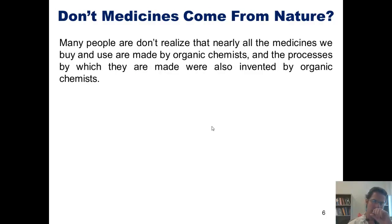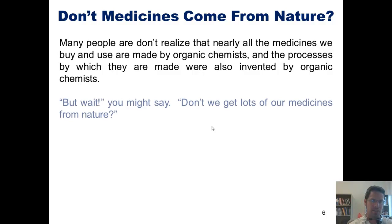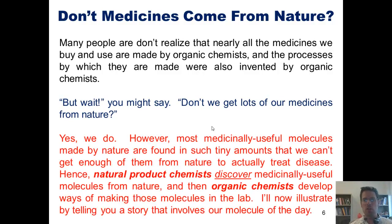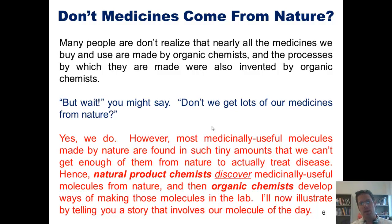Many people don't realize that nearly all the medicines that we buy and use as human beings are made by organic chemists, and the processes by which they are made are also invented by organic chemists and chemical engineers. You might say, don't we get a lot of our medicines from nature? Yes, we do. However, most medicinally useful molecules made by nature are found in such tiny amounts that we can't get enough of them from nature to actually treat disease. Hence, natural product chemists discover medicinally useful molecules from nature, and then organic chemists develop ways of making those molecules at large scale in the lab.